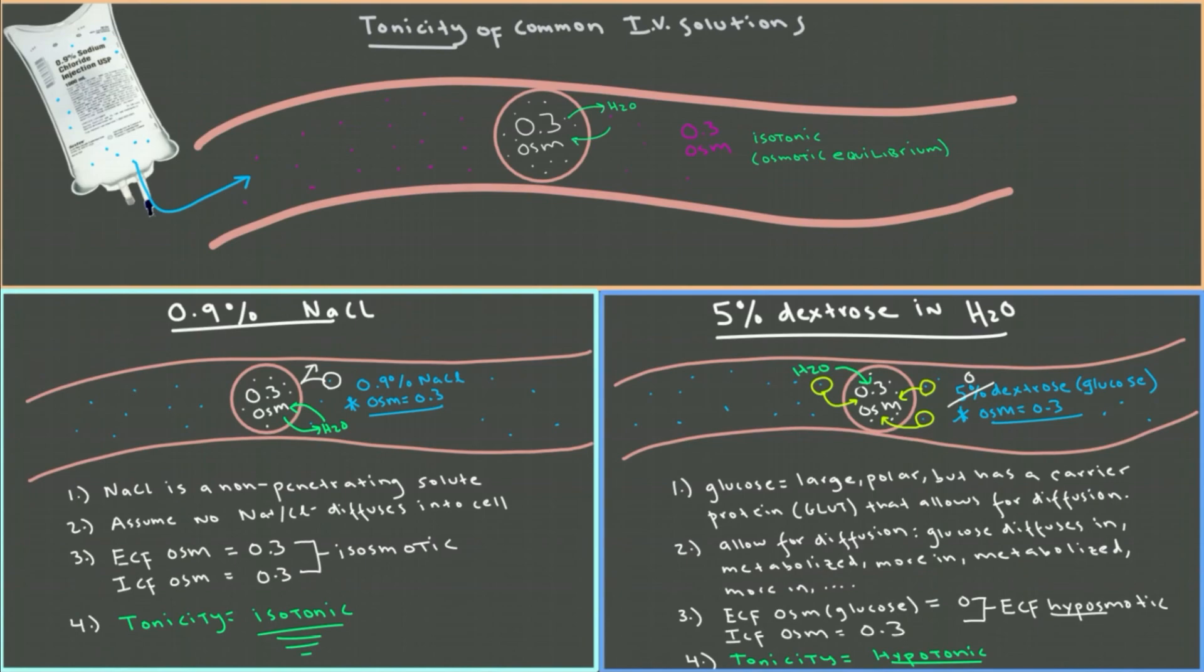So these are two interesting IVs. Both of them start off isoosmotic to your plasma, to your cells, but depending on whether it's sodium chloride or whether it's glucose, they might end up isotonic and your cells might be happy or they might end up hypotonic and your cells might be at risk of exploding.